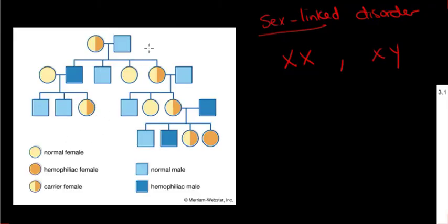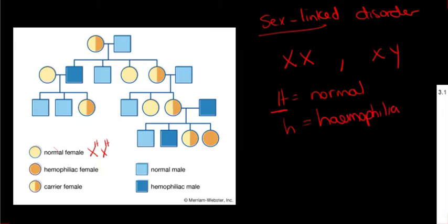In this diagram, males are represented with a square and females with a circle. At the bottom they'll give you a key box telling you what represents what. A normal female would have capital H capital H. A person without hemophilia has the capital H because it's the dominant trait, and somebody with hemophilia will be represented by lowercase h. A hemophiliac female would be homozygous recessive, and a carrier female will have a normal phenotype but in her genotype she will have a recessive trait for hemophilia.